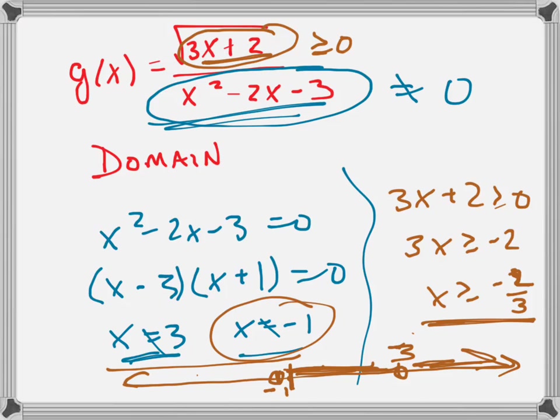So writing that in interval notation, I'll write it up here. Let's look at what this graph is. It's a closed dot right there. So it's going to be bracket, negative 2 thirds, comma, 3, open bracket, union, open bracket, 3, comma, infinity.